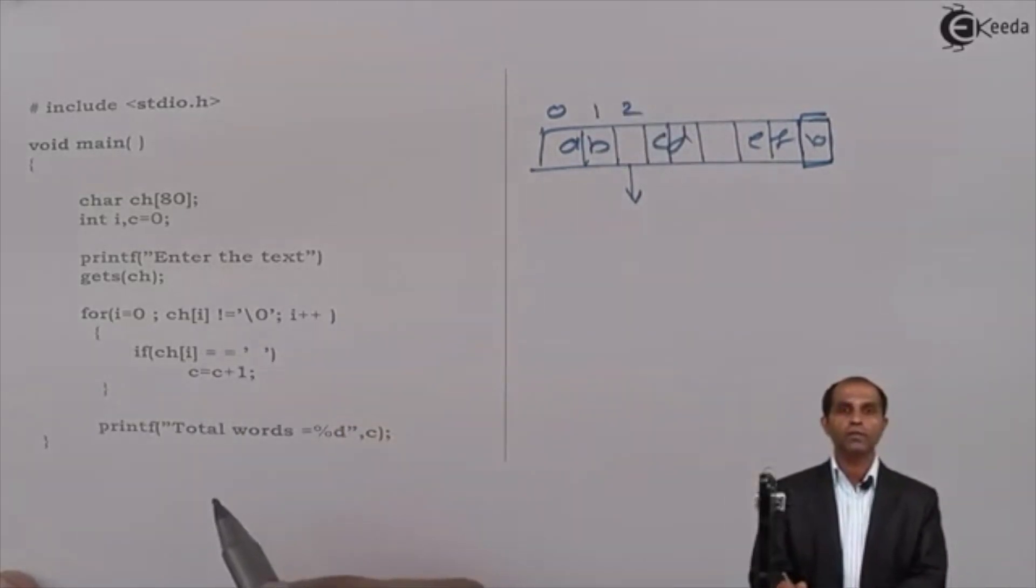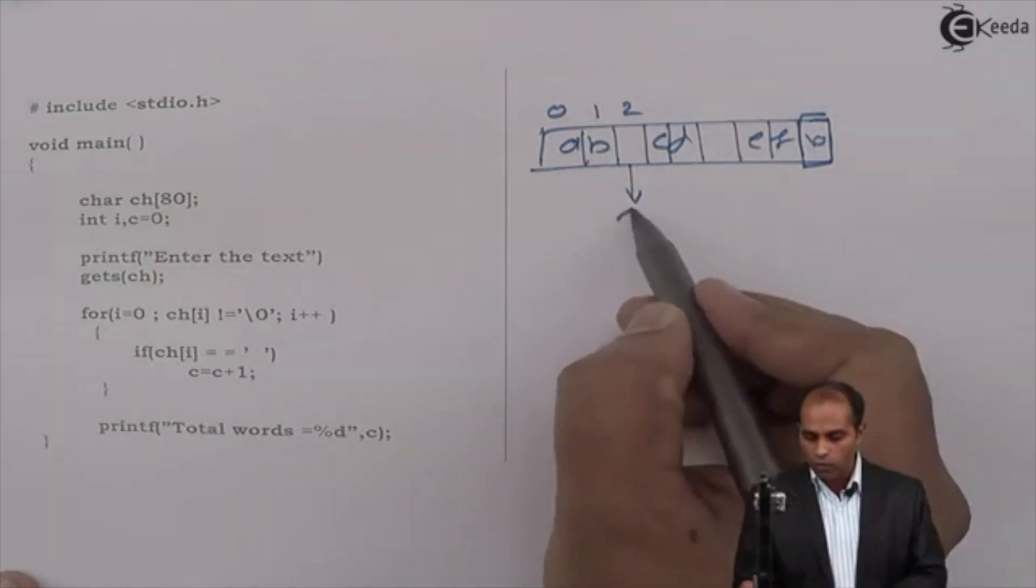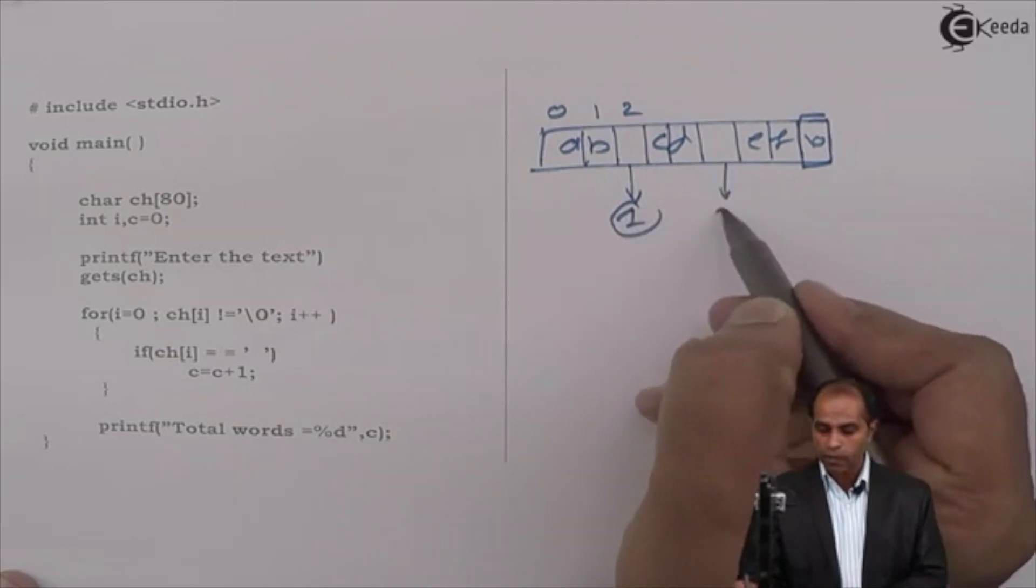CH of two, is it equal to blank space? Yes, it is equal to blank space. Where it is equal to blank space, what you do? You change the counter to one. So here the counter is made as one, here the counter is made as two.